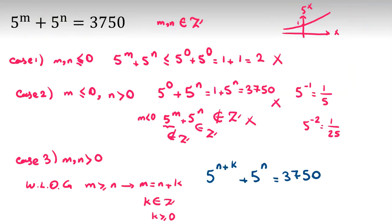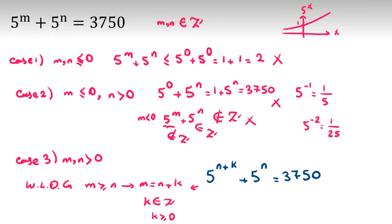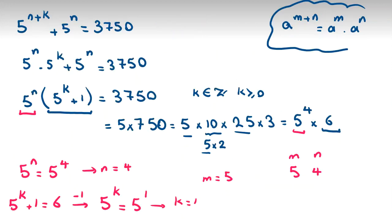Since m equals n plus k, we get m equals 4 plus 1 equals 5. So the answer is m equals 5 and n equals 4. However, because the problem is symmetric with respect to m and n, we can also switch them: the answers are (m, n) = (5, 4) or (4, 5). If you have questions, you can send a message to my WhatsApp number, and please don't forget to subscribe, turn on notifications, and like the video.